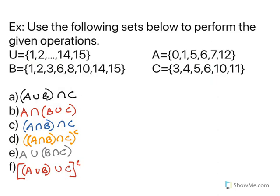Use the following sets below to perform the given operations. And if you really understand these, feel free to move on. But you can see we're getting into some complements, into some trickier ones. So feel free to stick around. Okay, so the universal set here is 1 to 15, whole numbers 1 to 15. We have set a that includes 0, 1, 5, 6, 7, and 12. Set b that is 1, 2, 3, 6, 8, 10, 14, 15, and then c: 3, 4, 5, 6, 10, and 11.